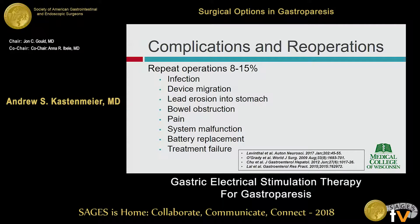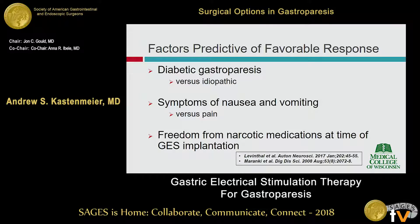There are also complications to device placement, including treatment failures where the patient wants the device removed, which occurs in somewhere between 8 and 15% of cases. Regarding predictive factors for a favorable response, it's pretty clear that diabetics respond more favorably than idiopathic gastroparesic patients. Symptoms of nausea and vomiting are much more responsive than other symptoms, especially pain, which generally is not as responsive — particularly in idiopathic patients. Patients should really be free of narcotic pain medication at the time of implantation, as that's a negative predictive factor.